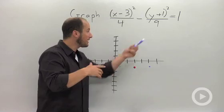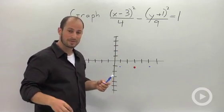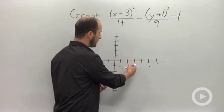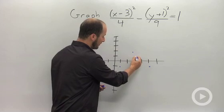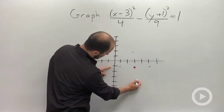Doing the same thing for the y-term, 9. 9 is 3 squared, so this tells us we are going to go up 3 and down 3 from the center. So from the center, up 3. From the center, down 3. We were at -1, so that takes us to negative 4.